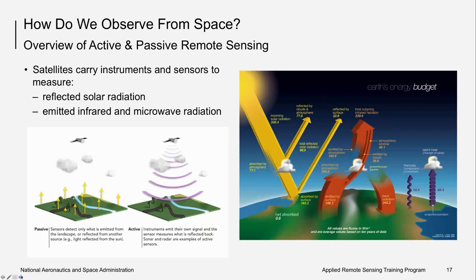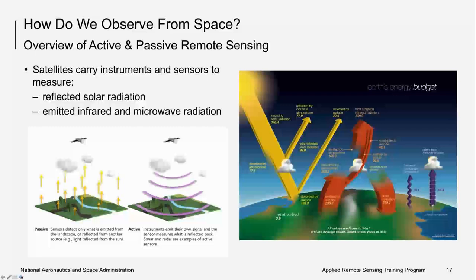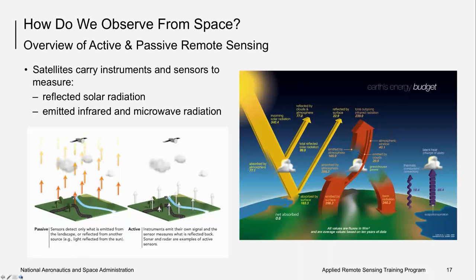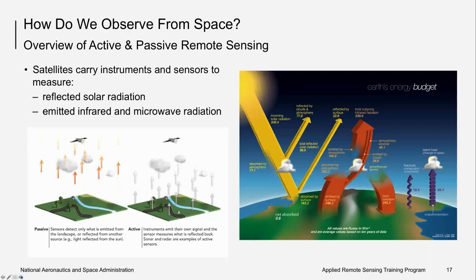For the purposes of this webinar, we are most interested in passive satellite sensors that measure reflected solar radiation in the visible range for use in ocean color algorithms. We are also interested in measuring emitted infrared and microwave radiation to observe sea surface temperature. We call these passive sensors because they detect reflected or emitted light energy from the sun. Active remote sensing like LiDAR is gaining popularity for understanding particles in aquatic environments, but we will not cover that in this webinar.